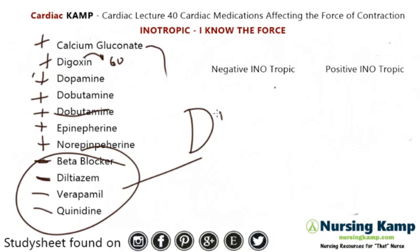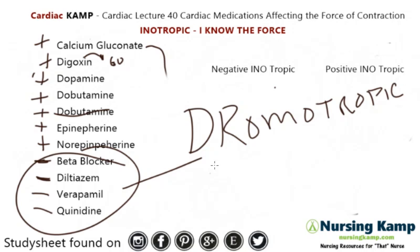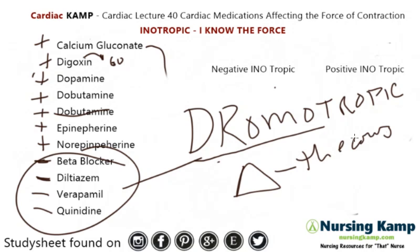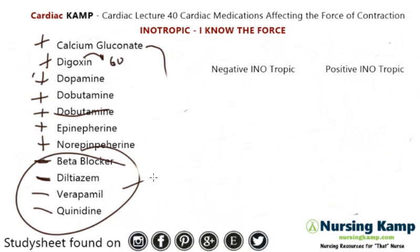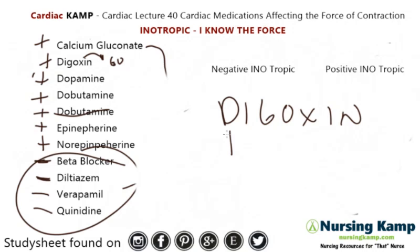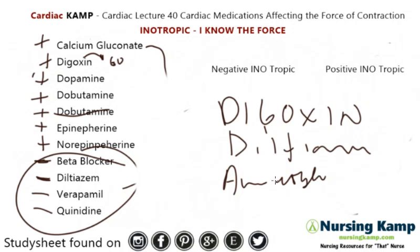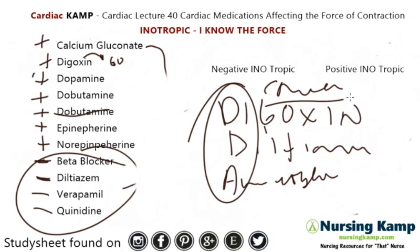There's also another term called dromotropic. Not enough for a full lecture, but dromotropic is basically anything that changes the course of the heart — meaning it's like converting rhythms. Things that can convert rhythms include digoxin, diltiazem, and amiodarone. So anything that can convert that rate or change it to something else is called a dromotropic medication.